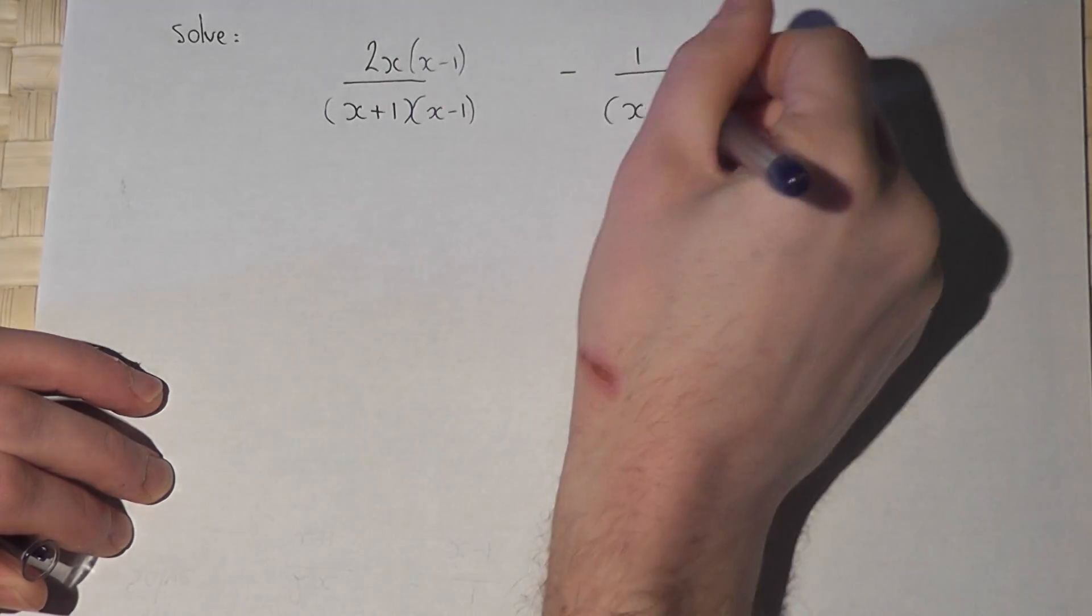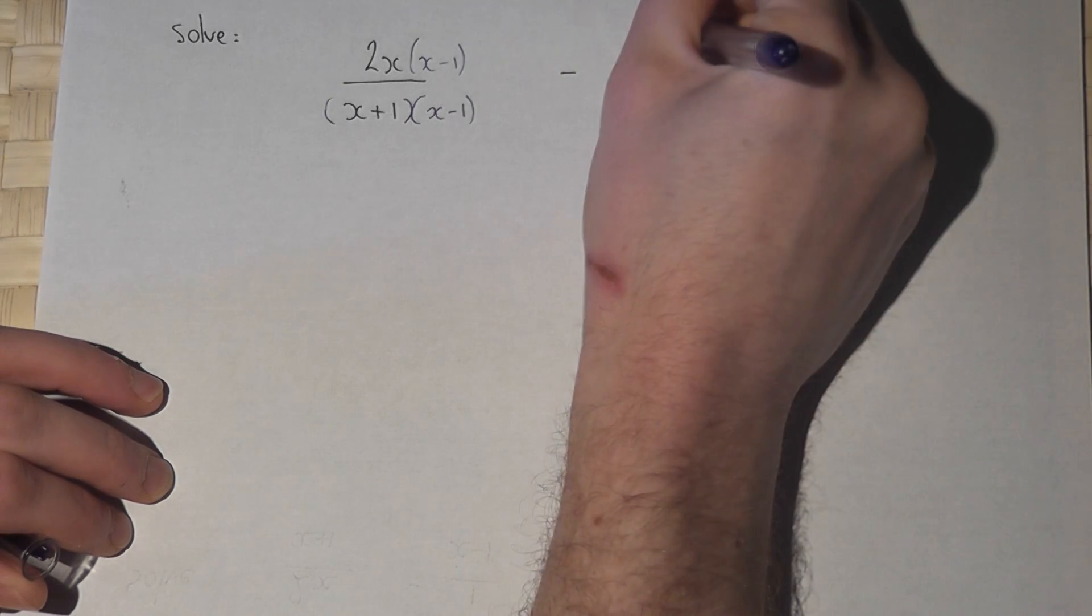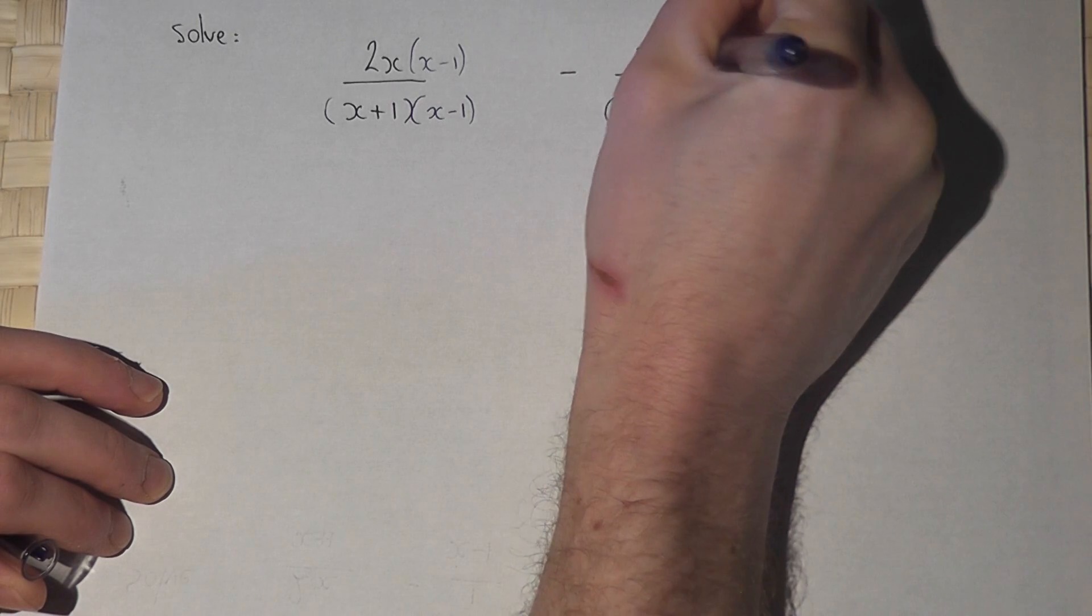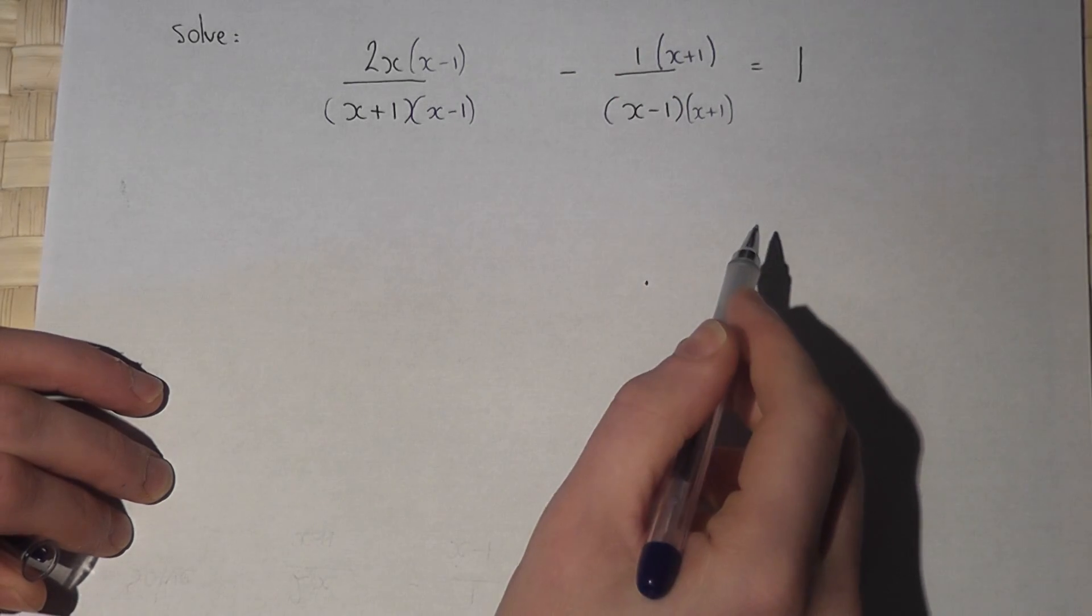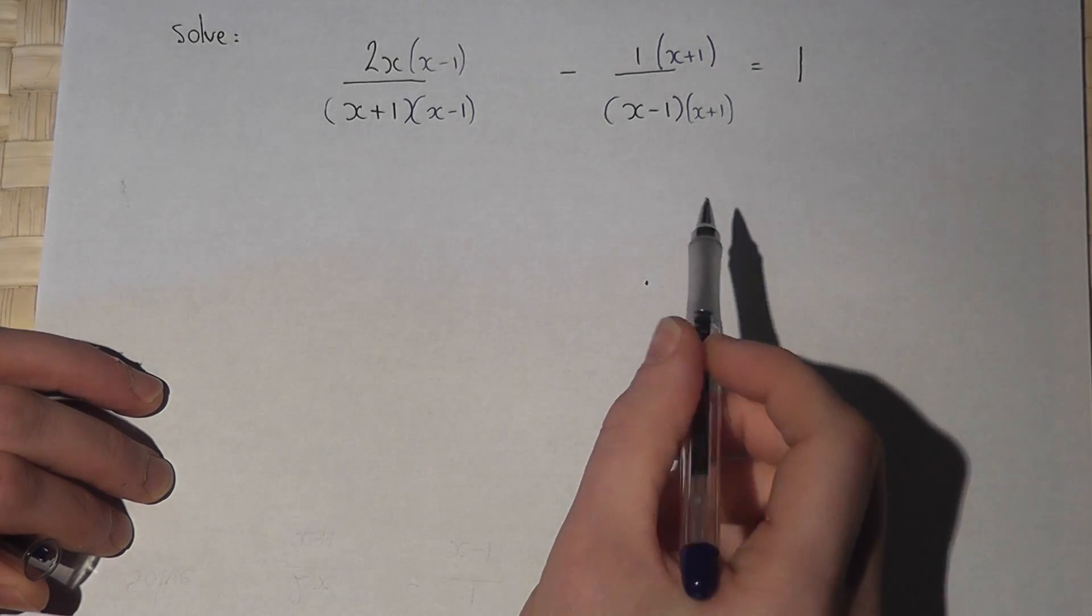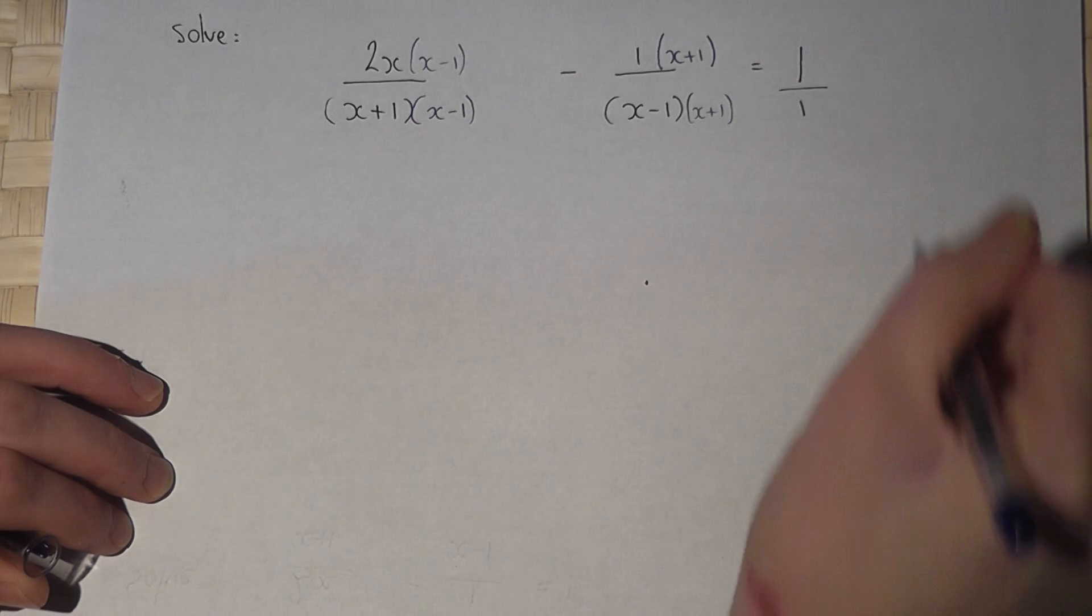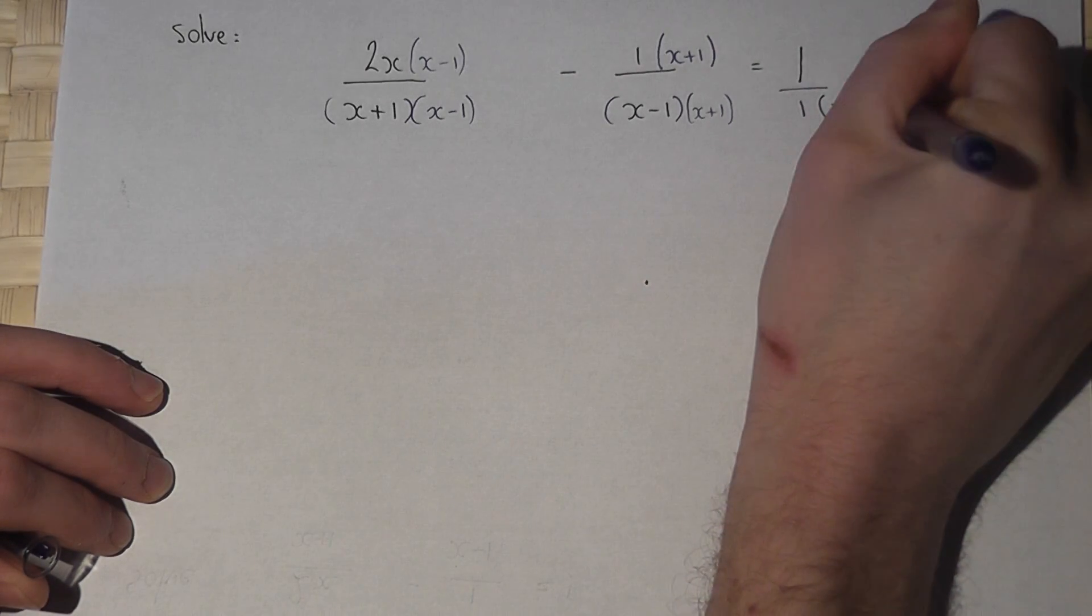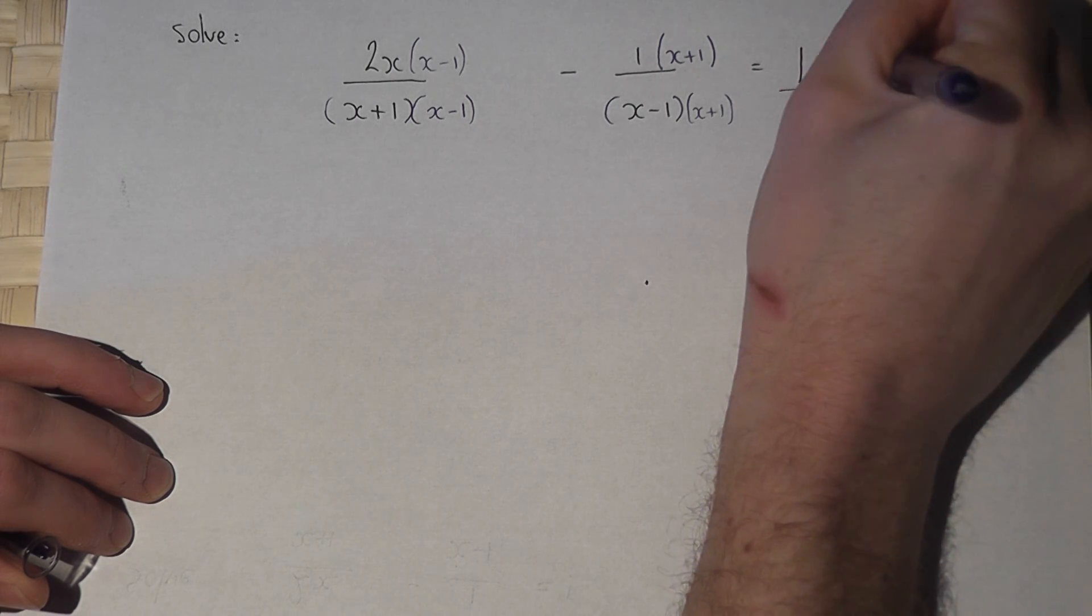I then put the x plus 1 over here and again do the same to the top. These two fractions now share the same denominator. I then see 1 as 1 over 1 and I put the x minus 1 and x plus 1 over there and do the same on the top.